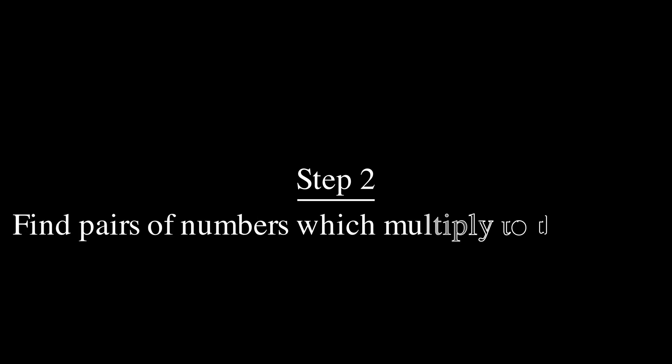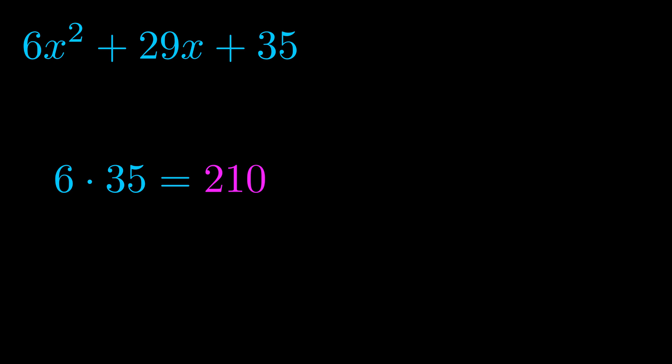Step two is to try to find all of the pairs which multiply to this number. Now turns out you don't really need to find all of them but go ahead and write down as many numbers as you can that multiply to the magenta value for now. Pause the video and resume when you're ready to continue.